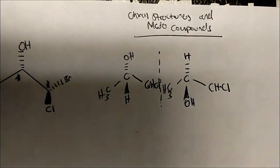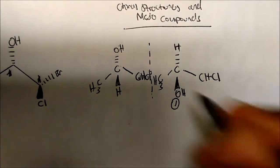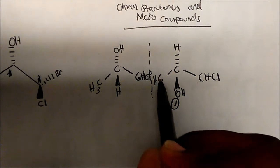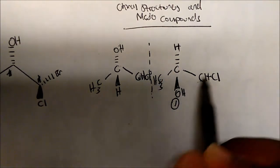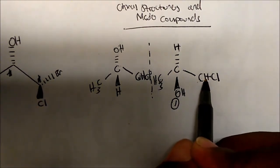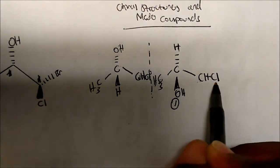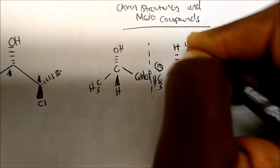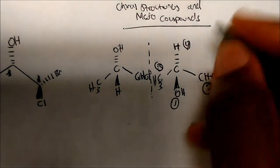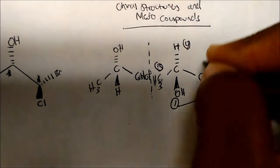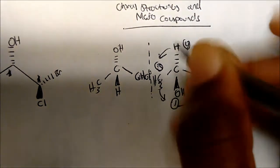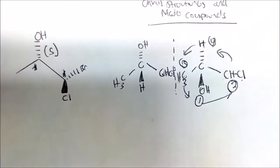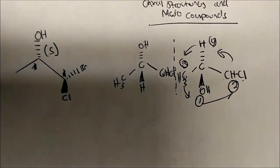Now we assign priorities. Oxygen is heavier than both carbons, so it gets priority one. As we go out further, one chain has an H while the other has a chlorine, so the chlorine chain is priority two, and the methyl is priority three. Hydrogen is always priority four. Drawing the arrow from one to two to three, it's going left — so this center is labeled S.